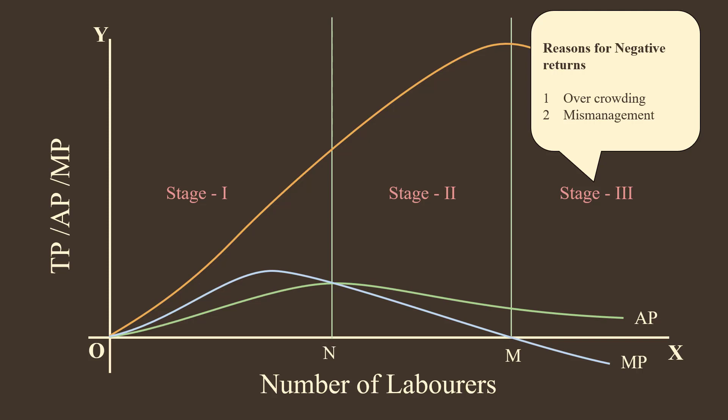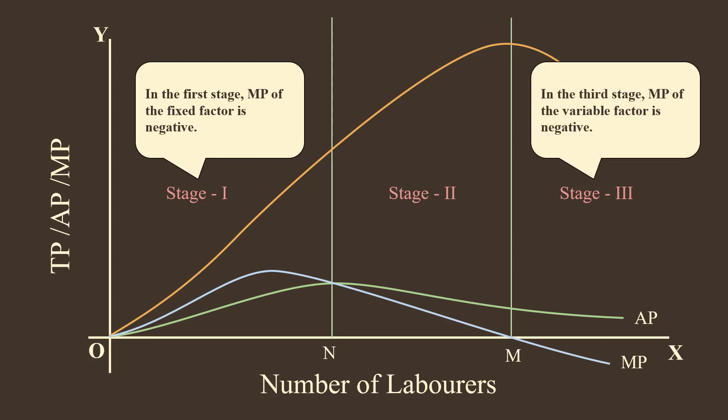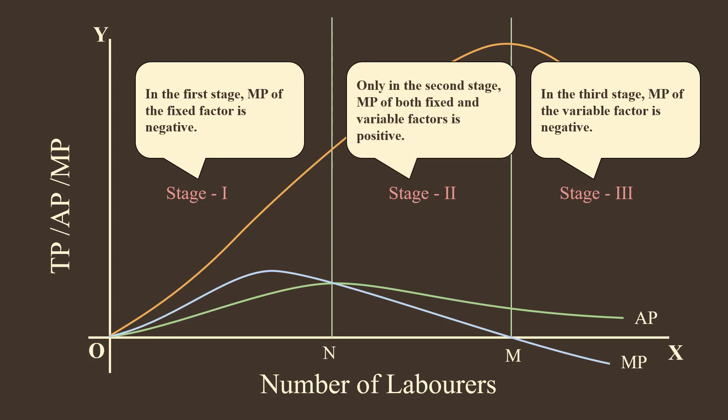The Stage of Operation. In the first stage, marginal product of the fixed factor is negative. In the third stage, marginal product of the variable factor is negative. Only in the second stage, marginal product of both fixed and variable factors is positive. A prudent producer will operate only in the second stage.